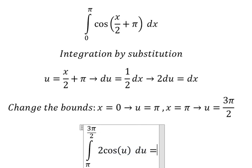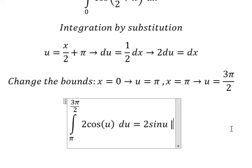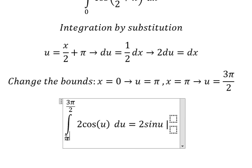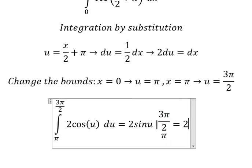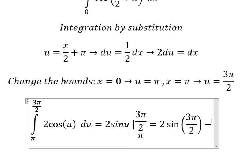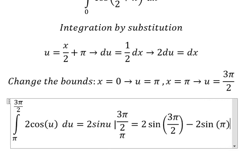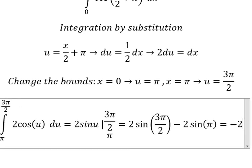The integration of cos u gives us sin u, and I will put the bounds from π to 3π over 2. Now we have the final answer which is negative 2. This is the end, thank you for watching.